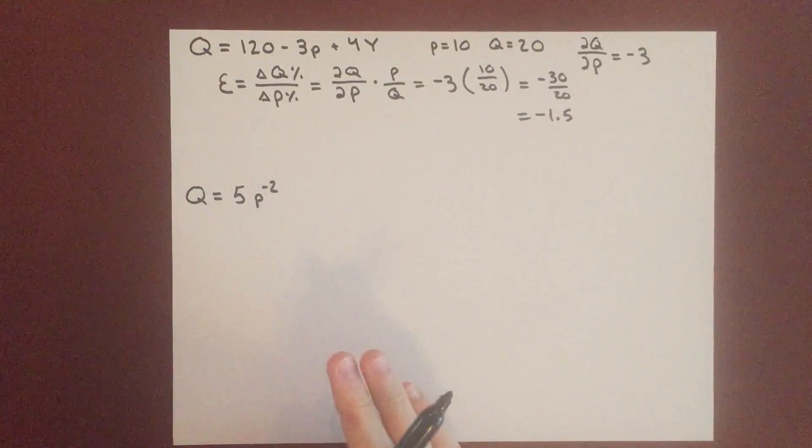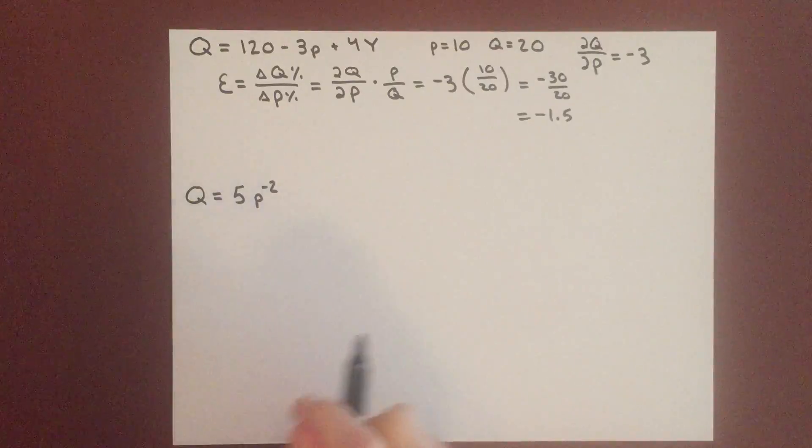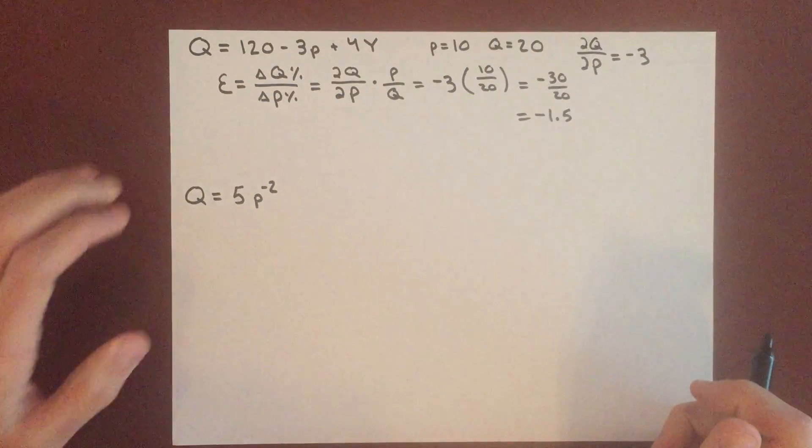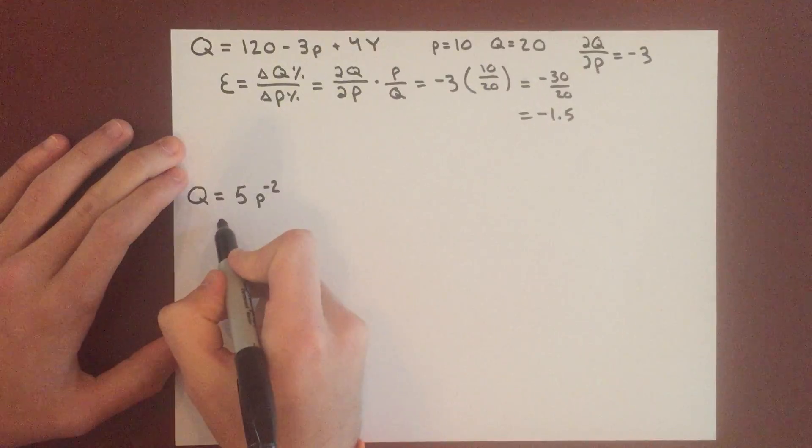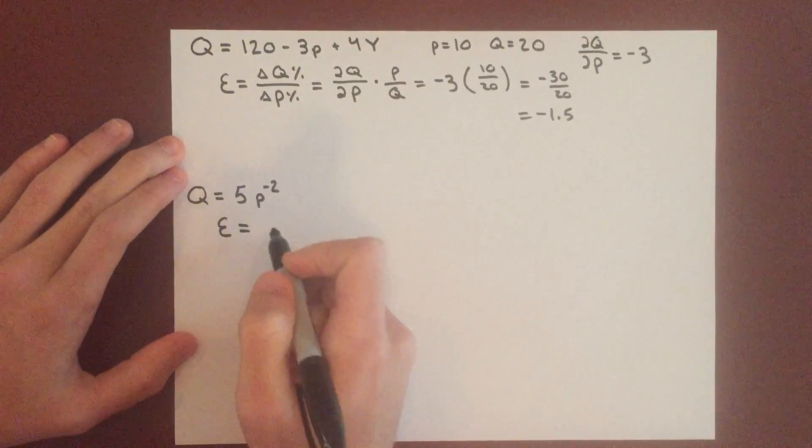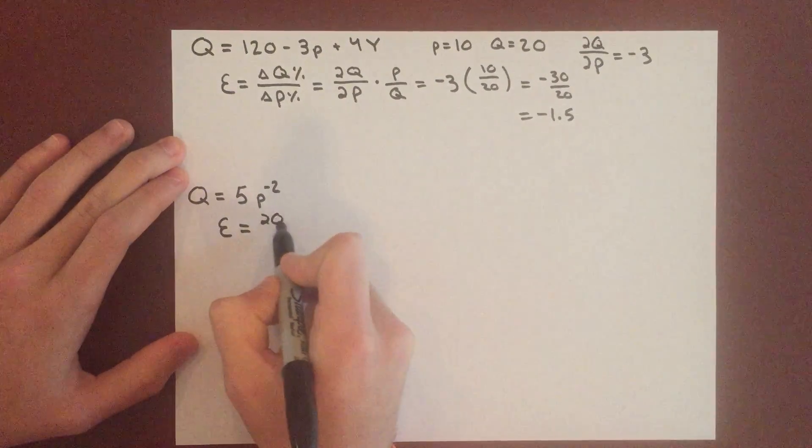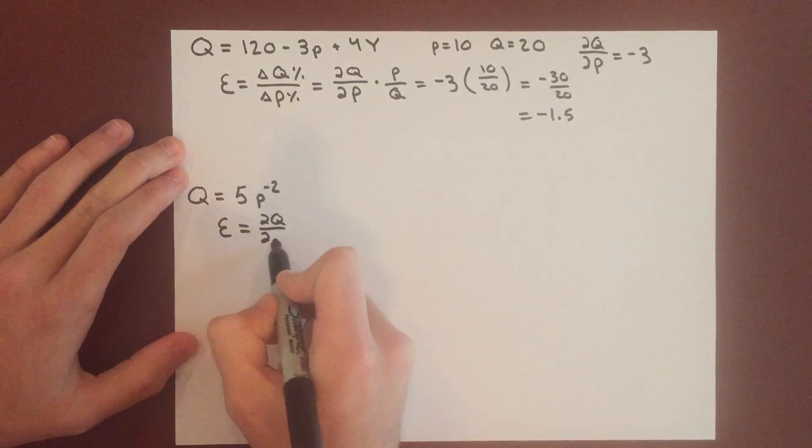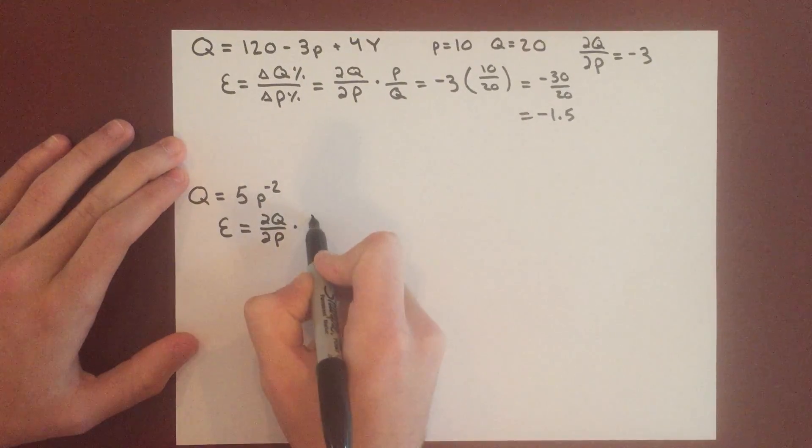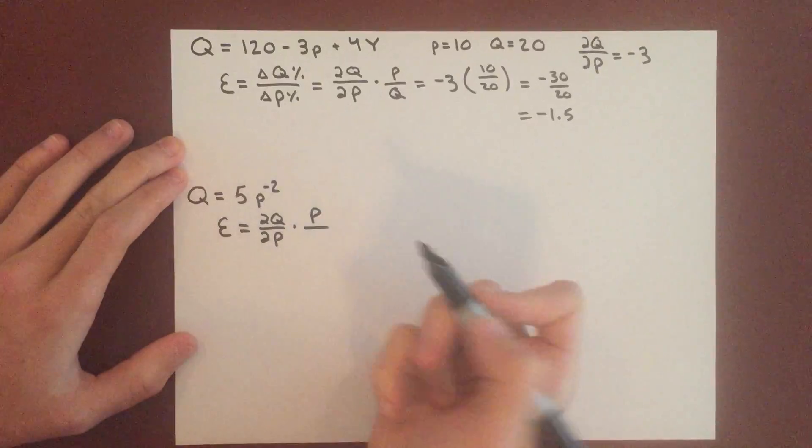where we don't know price or quantity, but we know how they're related. This might not seem like enough information, but we can still find it using the elasticity equation. So we're using calculus here because we don't know,